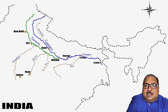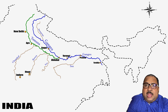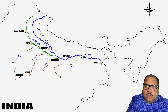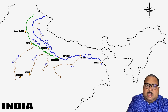Yamuna, Chambal, Betwa and Ken are all right bank tributaries of Ganga. Another important right bank tributary of Ganga is Son river. Son river originates in the Amarkantak Plateau of Madhya Pradesh, then flows and meets Ganga near Patna.